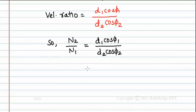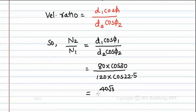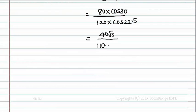Now let us substitute the given values in the above equation. So it is equal to 80 into cos 30 by 120 into cos 22.5 which is equal to 40 root 3 by 110.87. That is equal to 0.625.